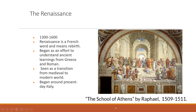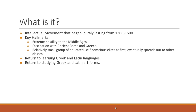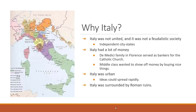The Renaissance was an intellectual movement that began in Italy from 1300 to 1600. Key hallmarks include extreme hostility toward the Middle Ages and fascination with ancient Rome and Greece. Initially, it involved a relatively small group of educated, self-conscious elites, eventually spreading to other classes and other parts of Europe. It involved returning to learning Greek and Latin languages and studying those art forms and texts.